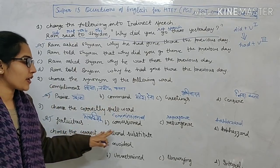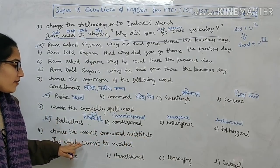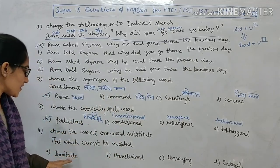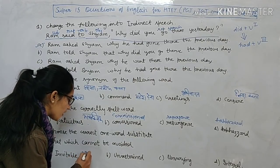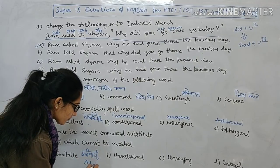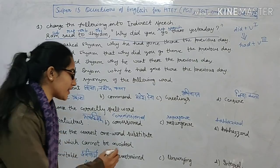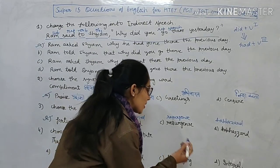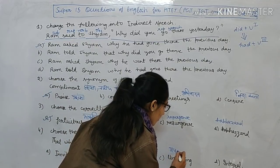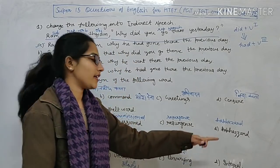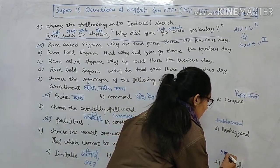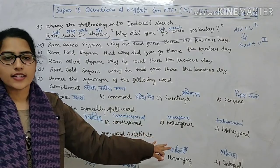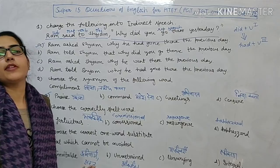Next: choose the correct one-word substitute. The sentence is 'that which cannot be avoided' — meaning jo tala nahi ja sakta (that which cannot be escaped). Option A is 'inevitable' — meaning anivaariy (unavoidable). Option B is 'unrestrained' — meaning aniyantrit (uncontrolled). Option C is 'unwavering' — meaning jo change na kiya ja sake. Option D is 'integral' — meaning milana, ek karna. The answer is 'inevitable' — option A.